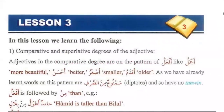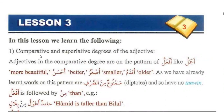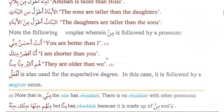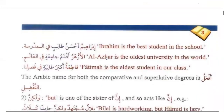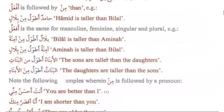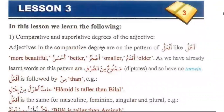In lesson number three you will learn about comparative degree and superlative degree in Arabic. The word for comparative degree and superlative degree is the same, and it is called ismuth tafsir. Both comparative and superlative degrees are on the pattern of af'alu. For example, ajmalu and aqdamu are used for both comparative and superlative degree.